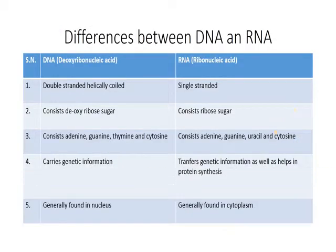Now let us look at the difference between DNA and RNA. DNA is double-stranded, while RNA is single-stranded. DNA contains deoxyribose sugar — meaning the hydroxyl radical is removed from the second carbon. In RNA, the hydroxyl radical is present at both the second and third carbons.